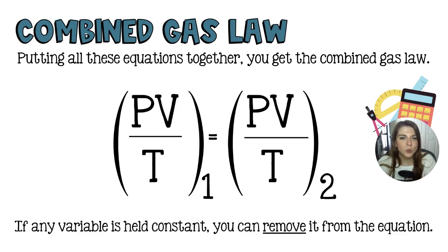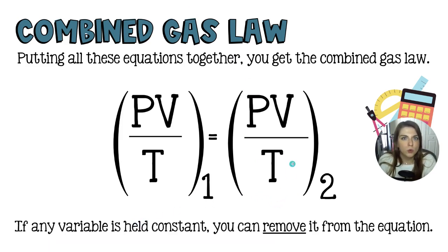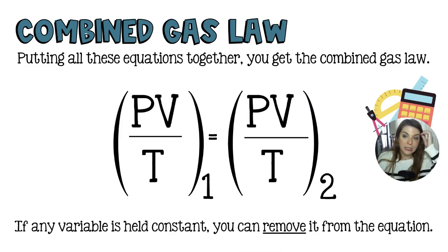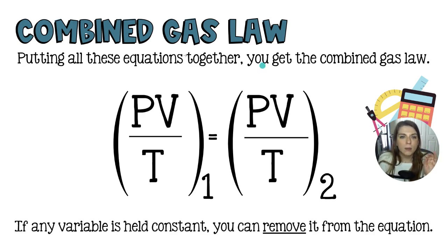These equations are largely fractions, and you can only solve them if you are missing one variable. If you use the entire combined gas law, you need five values to solve for the sixth, or if two variables are held constant they are eliminated, leaving you needing three known values to solve for the fourth. To solve, you cross-multiply and solve for the missing variable.